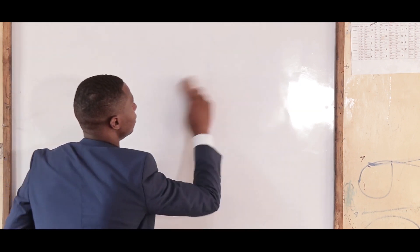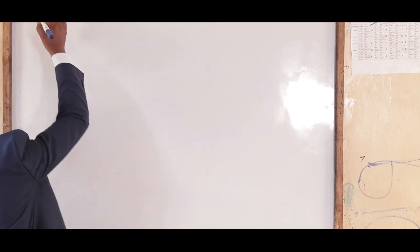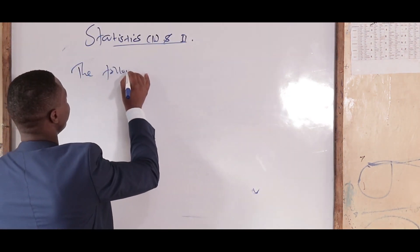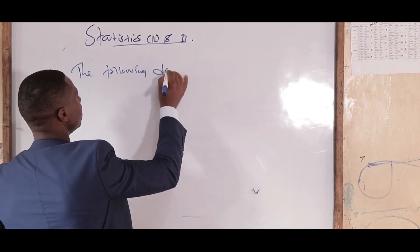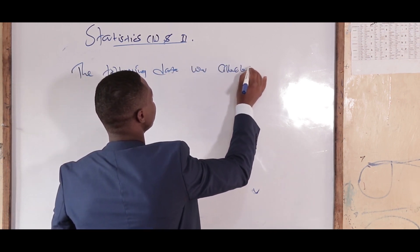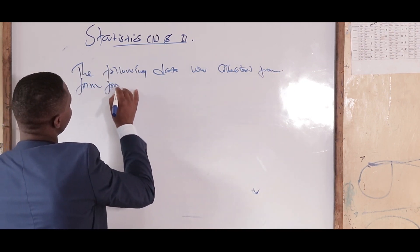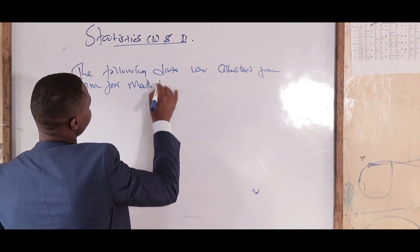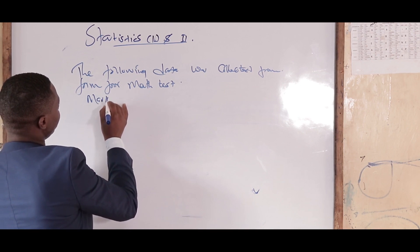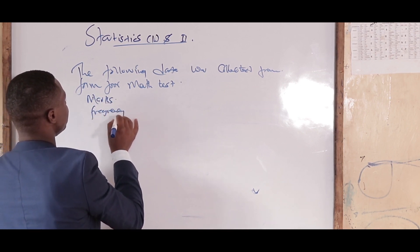This question is going to give us the whole concept. The question appears like this: the following data was collected from a Form 4 math test. The data shows marks and the number of students, that is the frequency.